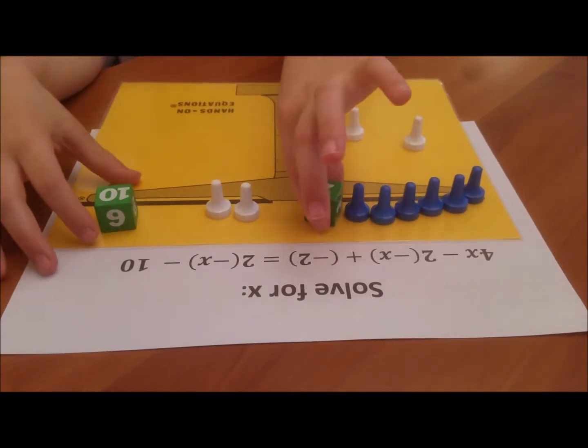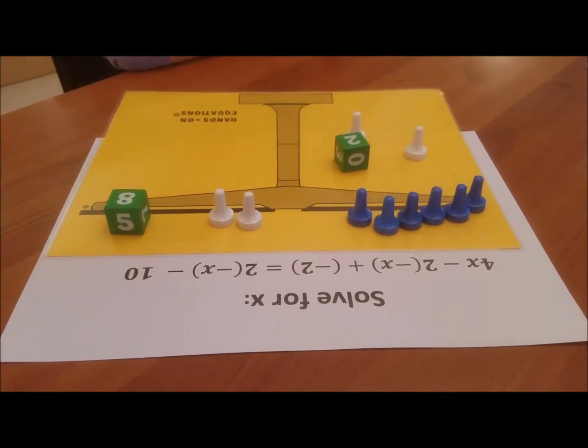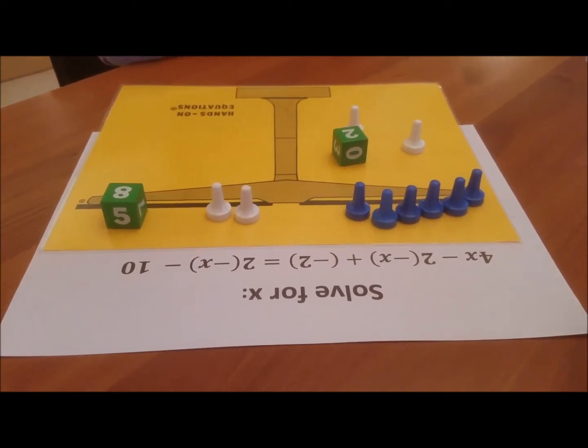Any legal moves? Okay, so you take away a green two or negative two from each side.